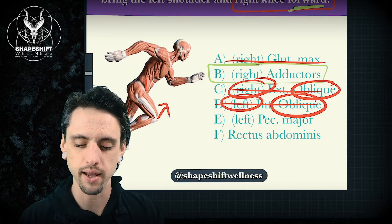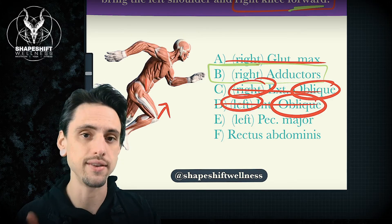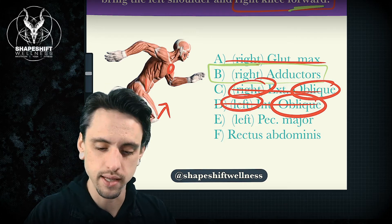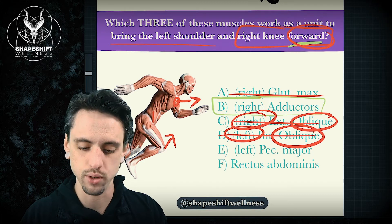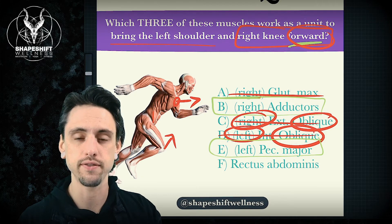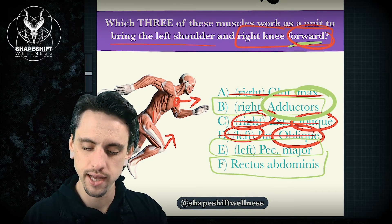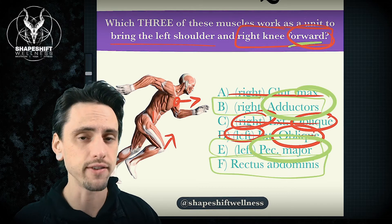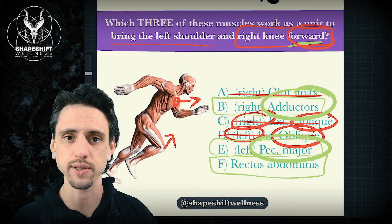Next, left pec major. The left pec major definitely moves the left arm, and it is part of the front functional line. On the left side, the left pec major would bring the left shoulder forward — and that is what we're looking for, so yes, that is a correct answer. And rectus abdominis is part of the front functional line — it connects the adductors and the pec major as part of the front functional line. If you don't know what the front or back functional line is, I've already made videos on those two items, so please review those.